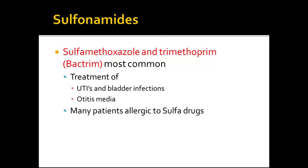Sulfonamides — the main medication in this class is sulfamethoxazole with trimethoprim, also called Bactrim. Used to treat UTIs, bladder infections, and otitis media. Many patients are allergic to sulfa drugs, so we need to be aware of this prior to prescribing. The reason this medication works so well for UTIs and bladder infections is that sulfa tends to collect in the bladder prior to being excreted, so it takes care of the infection.